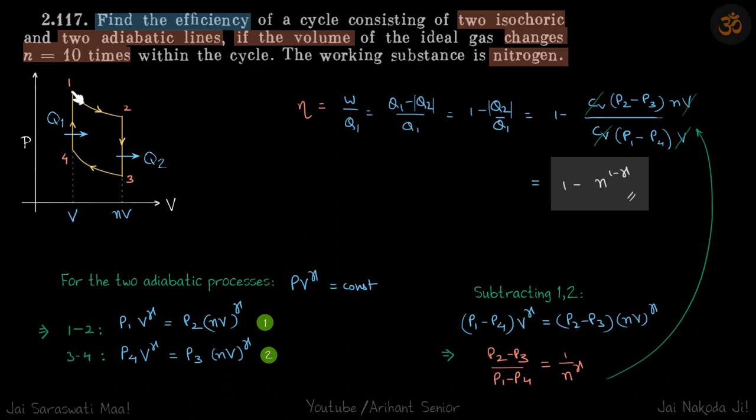In the whole process, the change in internal energy is zero, so delta q equals delta w. We can write delta w as delta q, which is q1 minus q2. Here we're writing q2 in modulus form, so both are positive.